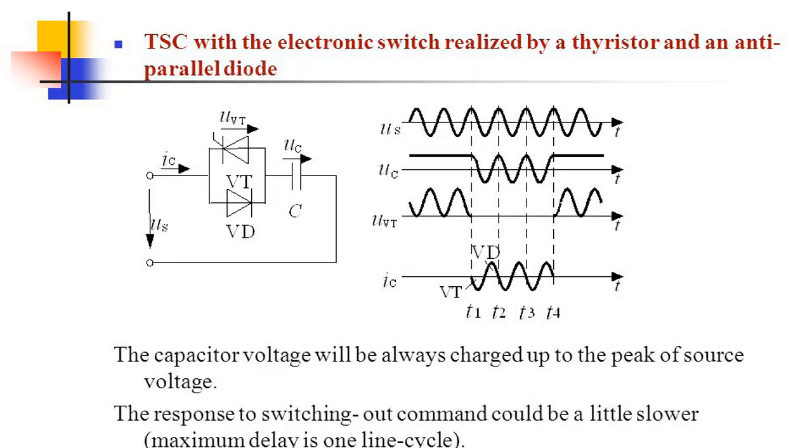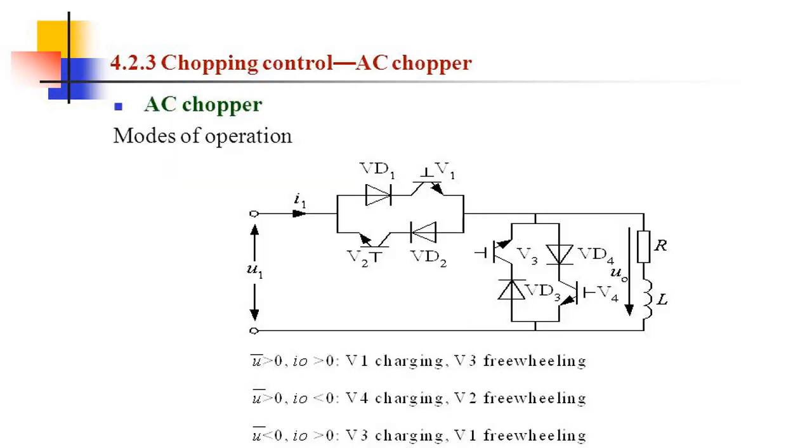TSC with the electronic switch realized by a thyristor and an anti-parallel diode. The capacitor voltage will be always charged up to the peak of source voltage. The response to switching out command could be a little slower, maximum delay is one line cycle. 4.2.3 Chopping Control AC Chopper, modes of operation.